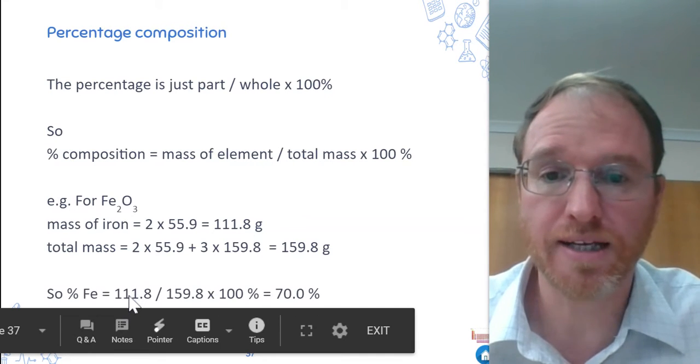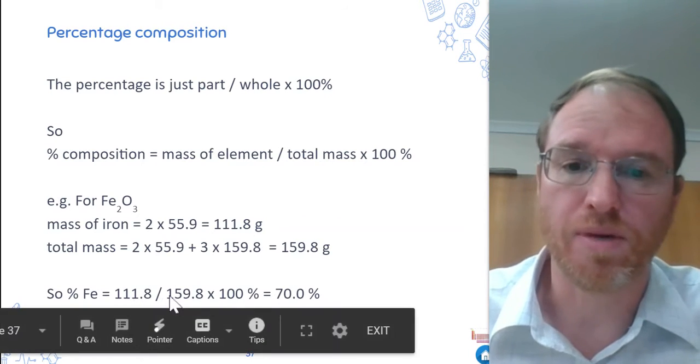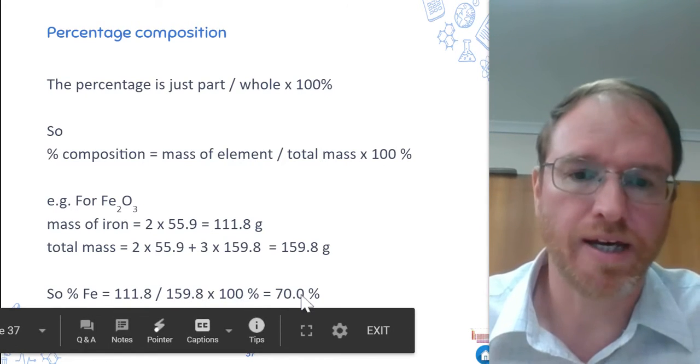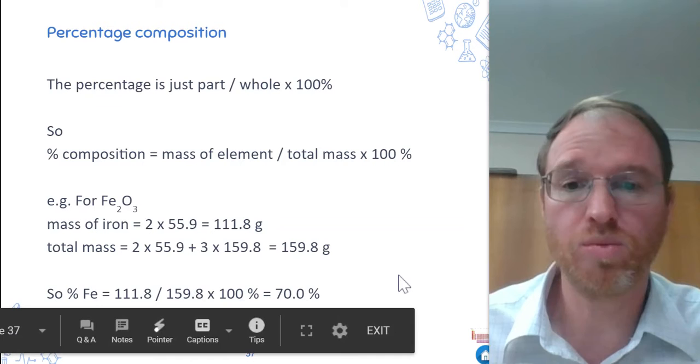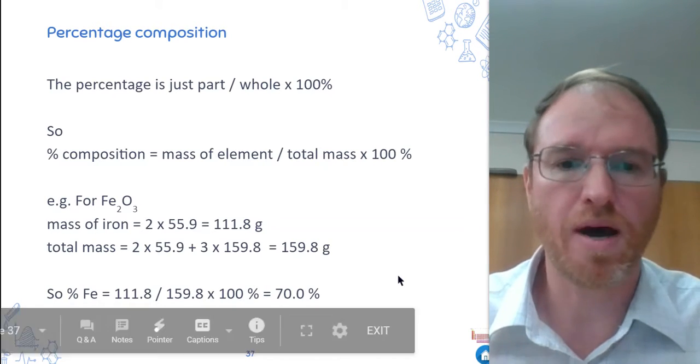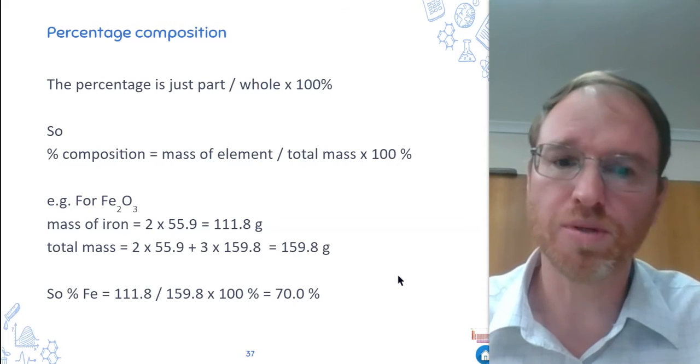So you can easily do the percentage calculation. It's 111.8, the iron, divided by 159.8, the total mass of one mole, times it by 100%, you get 70 percent. So we would say the iron oxide is 70% iron, and that's by mass. So we can do percentage composition.